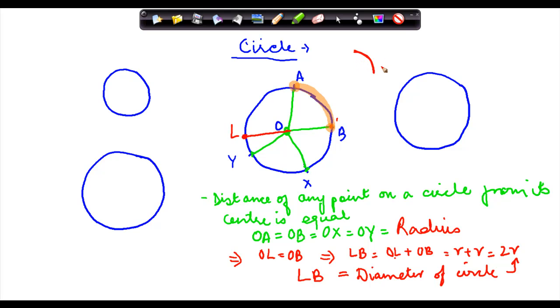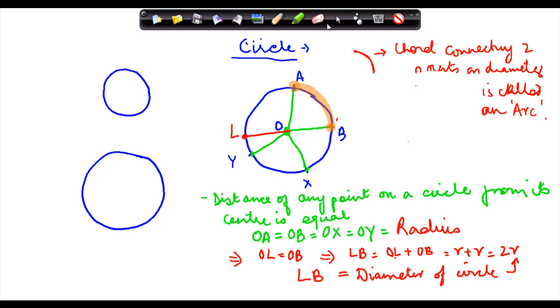So, this particular shape, which is nothing but kind of a chord. Connecting two points on diameter is called, what is it called? It is called an arc. And we write this as arc AB. You know, for line you used to draw a straight line. For arc, you need to draw it like this. So, this is basically the arc. So, these are some of the properties that one needs to be aware of about circles.